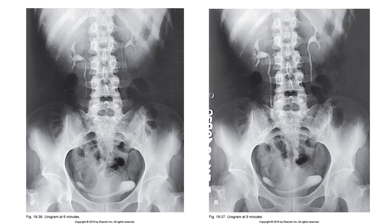AP oblique projections in 30-degree posterior oblique positions are often taken at the 5 to 10 minute intervals. Unless bladder or voiding urethrograms are to be made, the patient is sent to the restroom to void. A post-void radiograph of the bladder may be taken, which is used to check for small tumor masses or enlarged prostates in males.